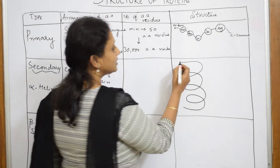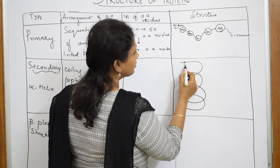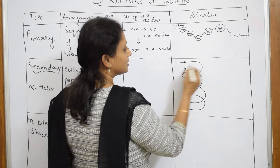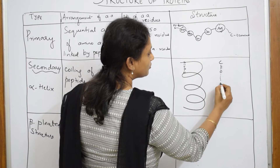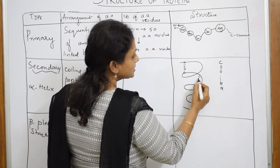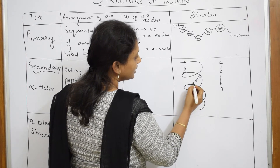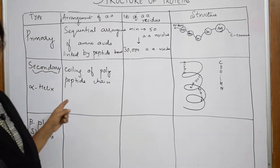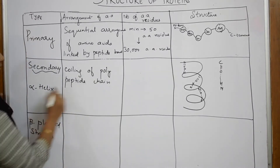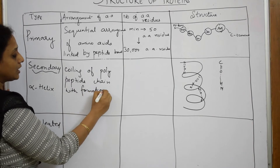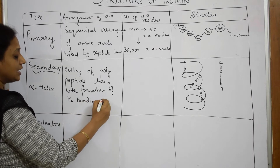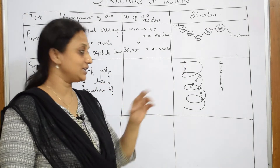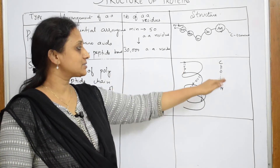In this coiled polypeptide chain, peptide bonds are still present. Observe carefully: there is a C double bond O, and there is an N-H group. Between the oxygen of C=O and the hydrogen of N-H, a hydrogen bond is formed. This hydrogen bonding repeats throughout the helix — C=O to N-H — and this is what characterizes the alpha helical secondary structure.